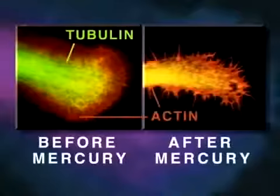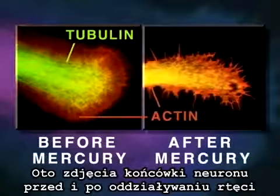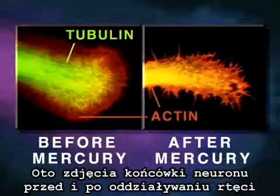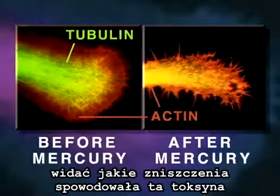Shown here is a neurite growth cone stained specifically for tubulin and actin, before and after mercury exposure. Note that the mercury has caused disintegration of tubulin microtubule structure.